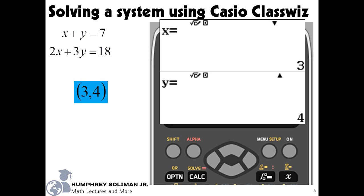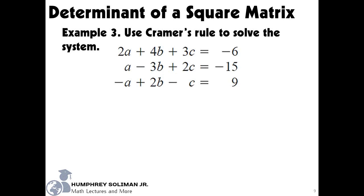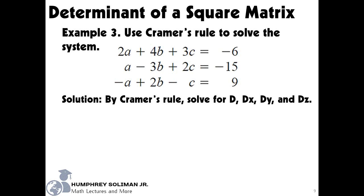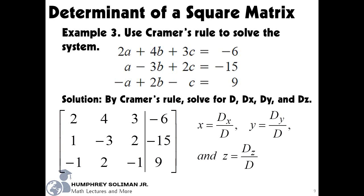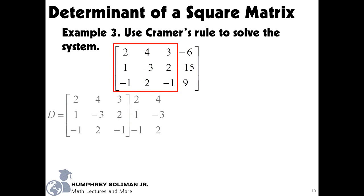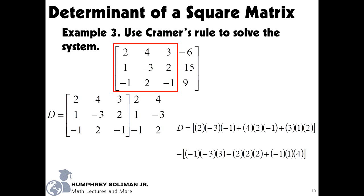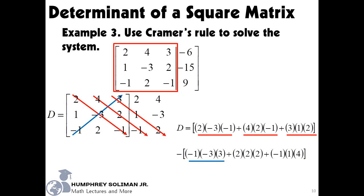For our example number 3, we will use Cramer's rule to solve the system given below. Our solution is divided into solving for d, dx, dy, and dz. First, we need the augmented matrix of the system. Next, we need the determinant of the system's coefficients for the variables — this will be our value of d. We already copied the first two columns and placed these beside it. Then we will get the sum of the quantity: 2 times negative 3 times negative 1, plus 4 times 1 times 2, plus 2 times 2. Minus the sum of the quantity: negative 1 times negative 3 times 3, plus 2 times 2 times 2, plus negative 1 times 1 times 4. Finally, d equals negative 9.